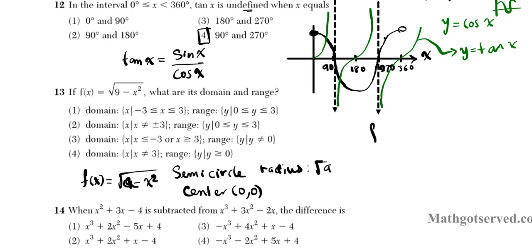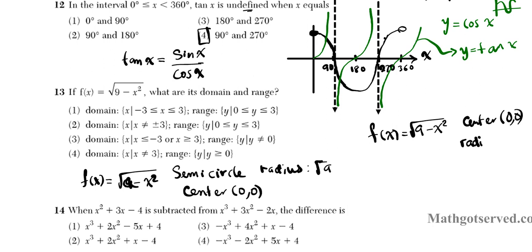Looking at f(x) = √(9 − x²), I can use geometry to find the domain and range. This is the function for the graph of a semicircle with center at the origin (0, 0) and a radius of √9, which is 3. If I can sketch this graph, I can easily determine what the domain and range are.